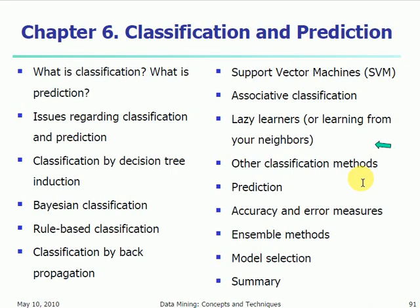Today's topic is lazy learners or learning from your neighbors. Lazy learners is a classification method, and we have seen several classification methods such as decision tree, Bayesian classifier, rule-based classification, classification using neural networks, especially backpropagation network, also classification using support vector machines, then using association rule mining. All these are examples of eager learners.